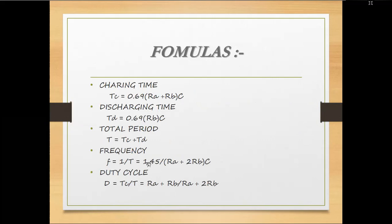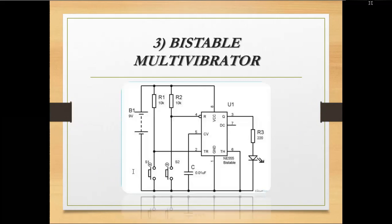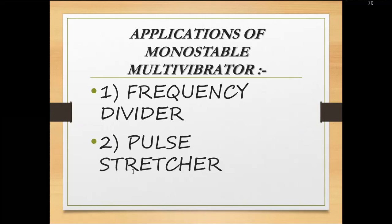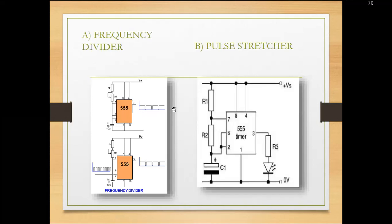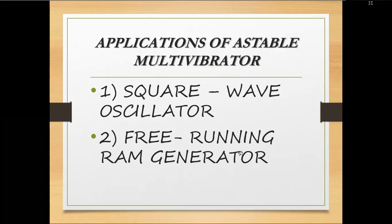The charging time Tc = 0.69 × (RA + RB), and the discharge time Td = 0.69 × RB. Total time and frequency are calculated from these. The duty cycle is approximately 50%. The bistable multivibrator is also a type, though it is not in the syllabus — only the diagram needs to be seen. Applications include a frequency divider, where the voltage switches between 2/3 Vcc and 1/3 Vcc. Other applications of the astable multivibrator include a square wave generator and a free-running ramp generator.